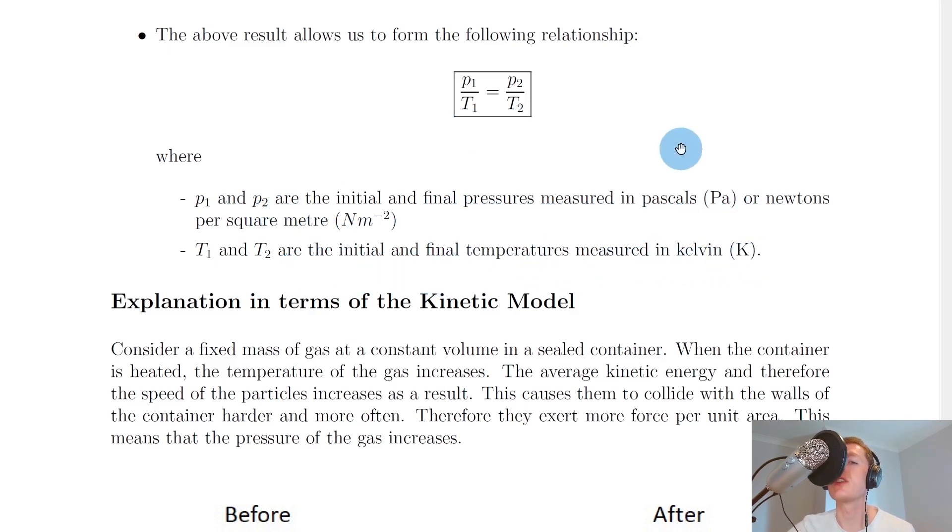So remember that Gay-Lussac's law only holds when temperature is measured in Kelvin, not in degrees Celsius, because we only got the directly proportional relationship, i.e. the straight line through the origin, when we took into account the Kelvin temperature scale.